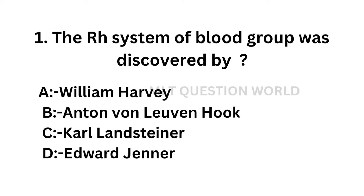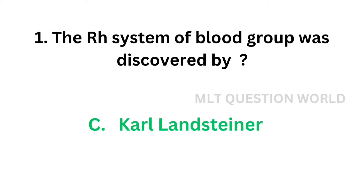Question number 1: The RH system of blood group was discovered by — option A: William Harvey, option B: Anton von Leeuwenhoek, option C: Karl Landsteiner, option D: Edward Jenner. The correct answer is option C, Karl Landsteiner. The RH system of blood group was discovered by Karl Landsteiner.